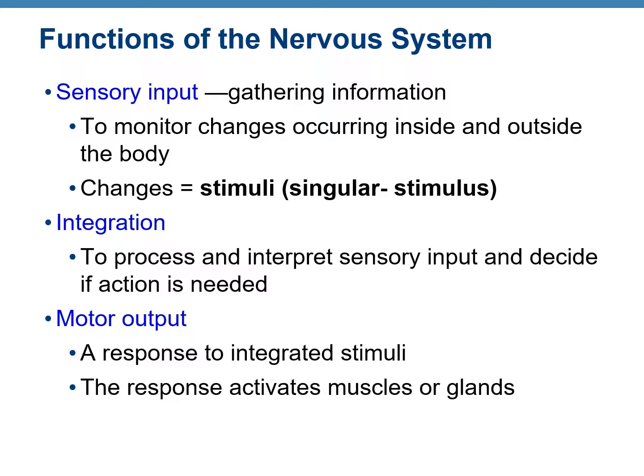The second function is integration. After the stimulus has been received, the information is processed and interpreted, and then it is decided if some kind of action is required. The third function is the motor output, which means the response to the processed stimulus. The brain or the spinal cord will send an order and respond to the stimulus by coordinating the activities of other systems, and the action is taken through the muscles or the glands. Whatever takes the action is known as the effector organ.